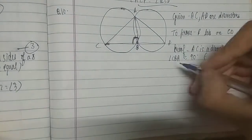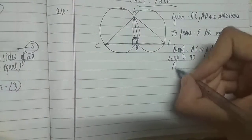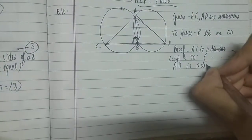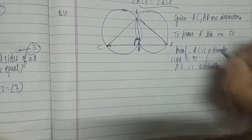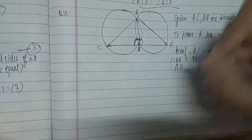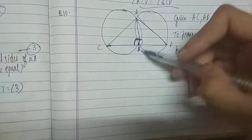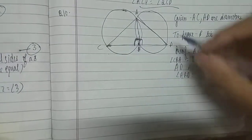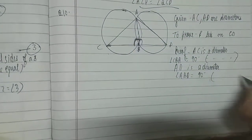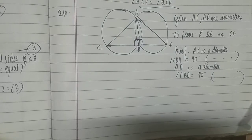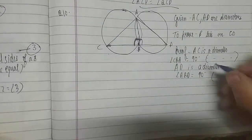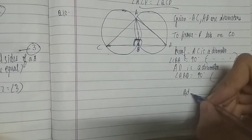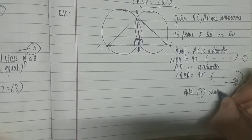If AD is a diameter, then angle ABD will be equal to 90 degrees, for the same reason — angles in a semicircle are right angles. This is equation one and this is equation two.